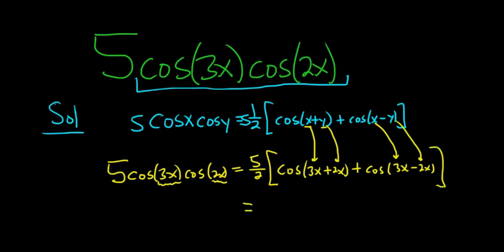So this equals five halves bracket cosine. 3x plus 2x is 5x, and then 3x minus 2x is simply x, so we just get cosine of x. And that's it.